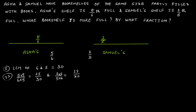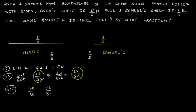Now we have 25/30 as the equivalent fraction of 5/6, and 12/30 as the equivalent fraction of 2/5, both with denominator 30 — they are now like fractions. The third step is simple: just compare them. For like fractions, we always compare the numerators. This is 25 and this is 12. Of course, 25 is greater than 12. Therefore 25/30 is greater than 12/30.